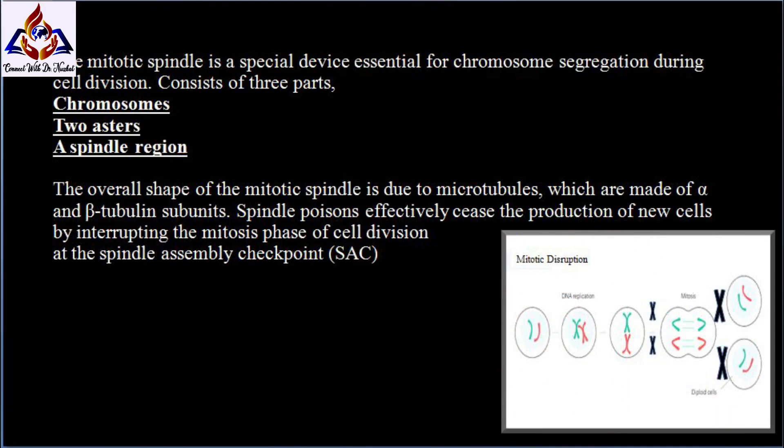The mitotic spindle is a special device essential for chromosome segregation or mitosis during cell division. It consists of three parts: chromosomes, two asters, and a spindle region. The overall shape of the mitotic spindle is due to microtubules which are made up of alpha and beta tubulin subunits.